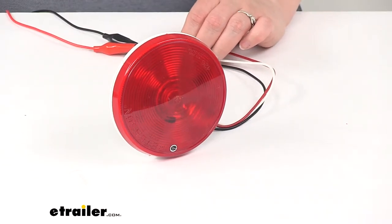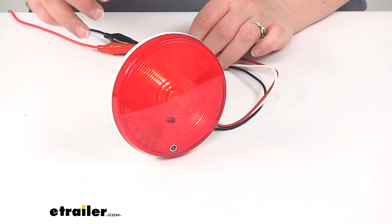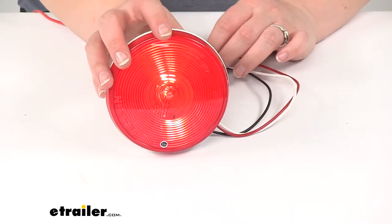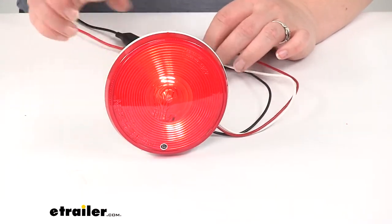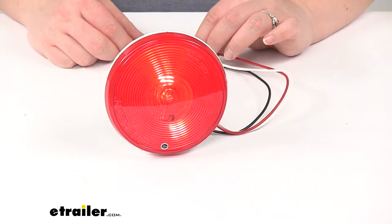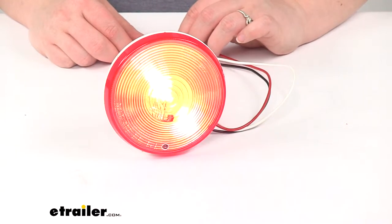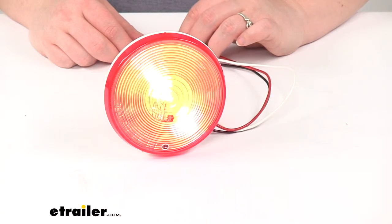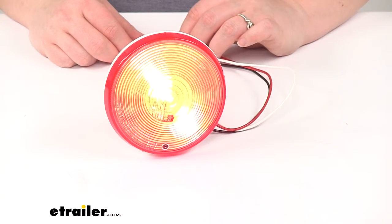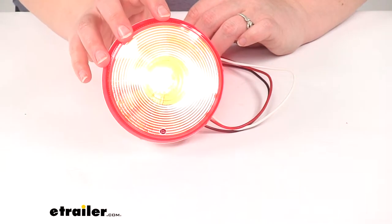If we turn on our power, you'll see our running light is coming on there since I have it connected to the black wire, and then if I connect the circuit for the red wire that's going to give us our turn signal or our brake signal. As you see, it's going to be that brighter light.